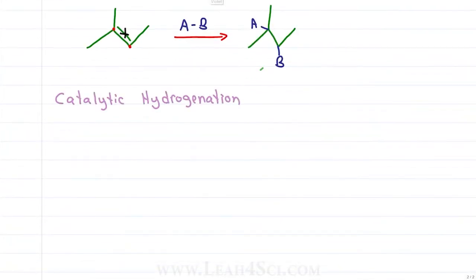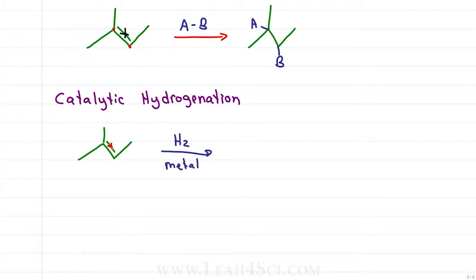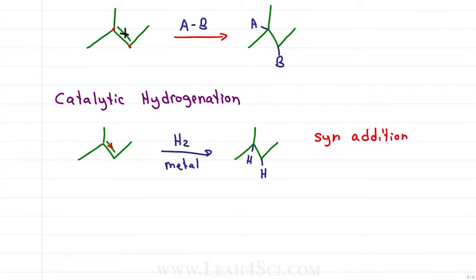In catalytic hydrogenation, we react with H2 in the presence of a metal catalyst to break the pi bond and add hydrogen on both carbon atoms. This is a syn addition in that both hydrogens add to the same face of the former pi bond.